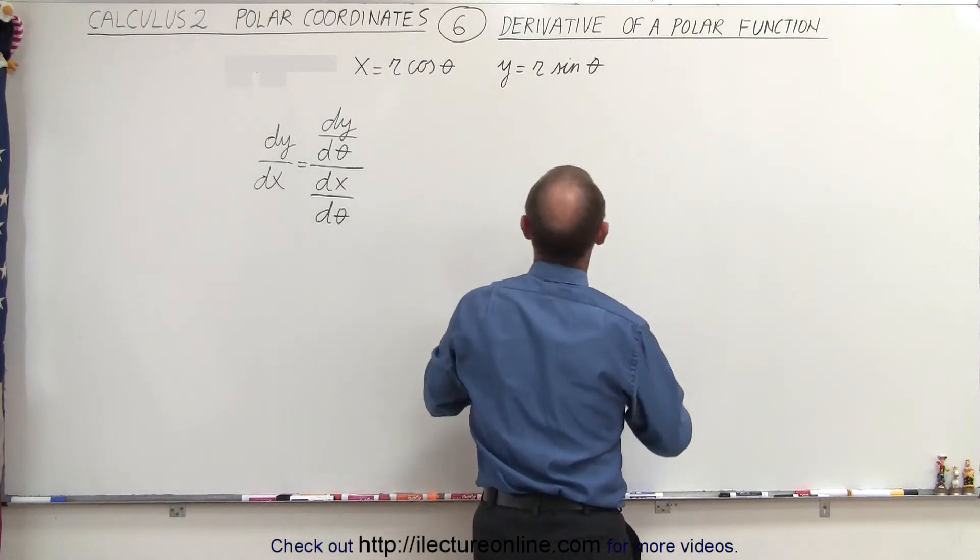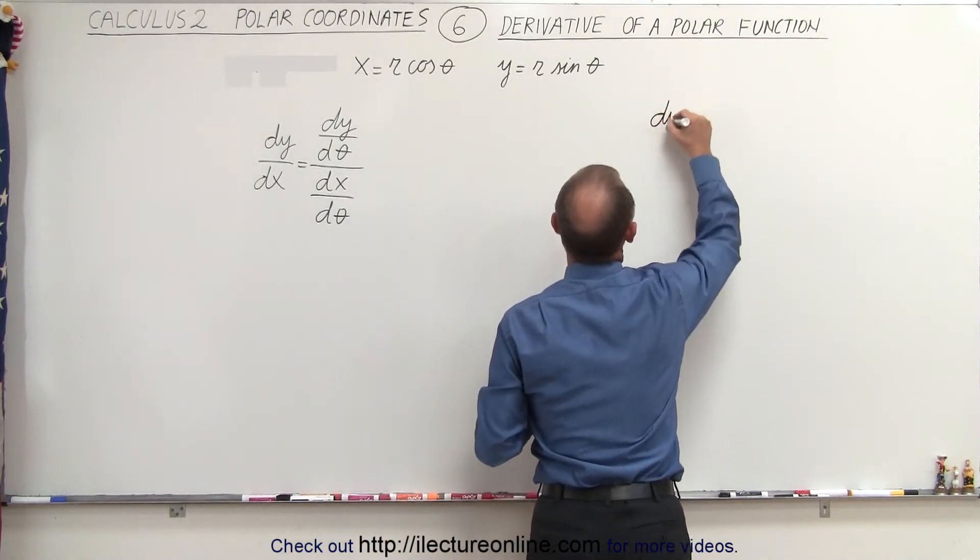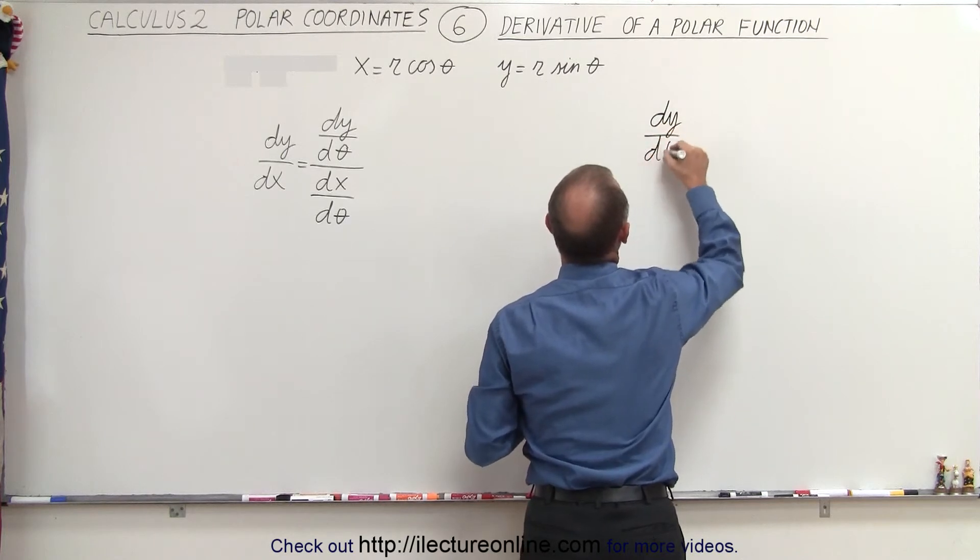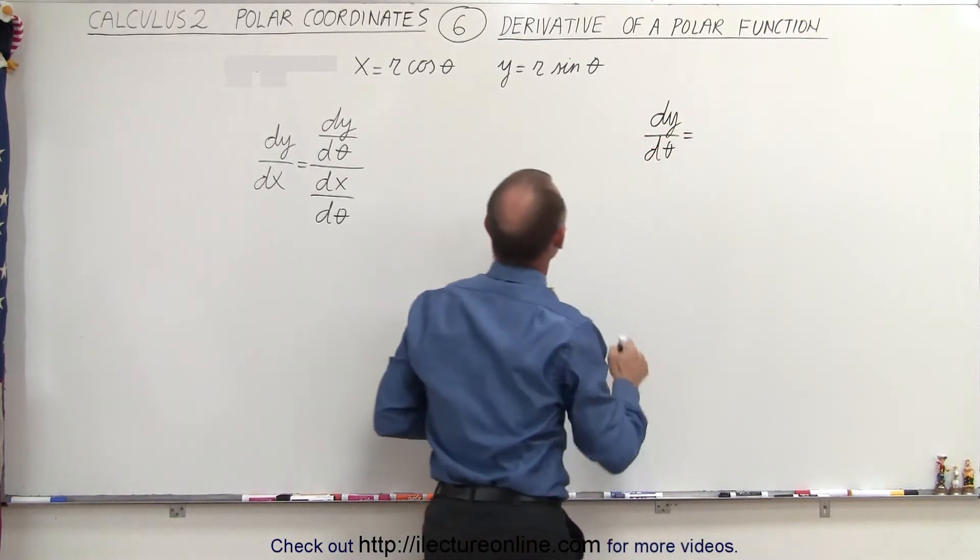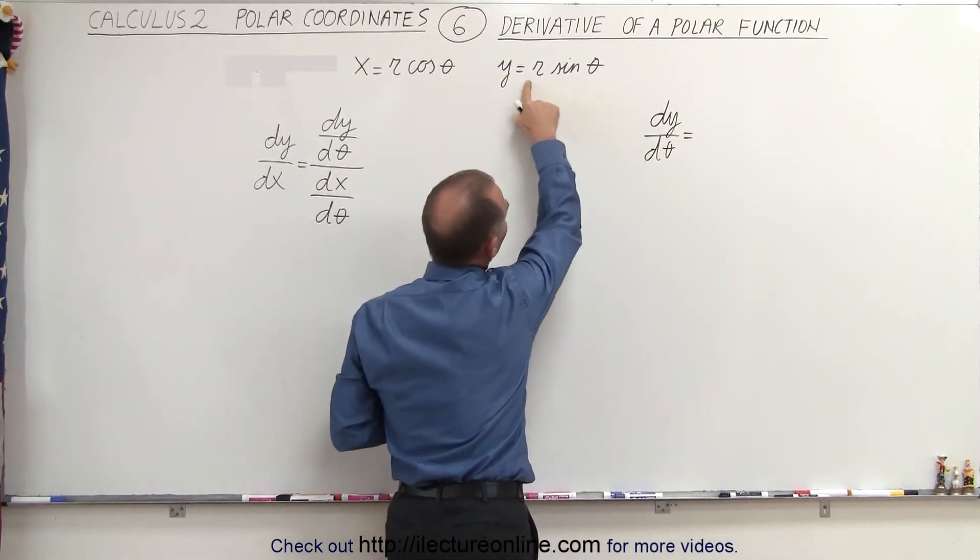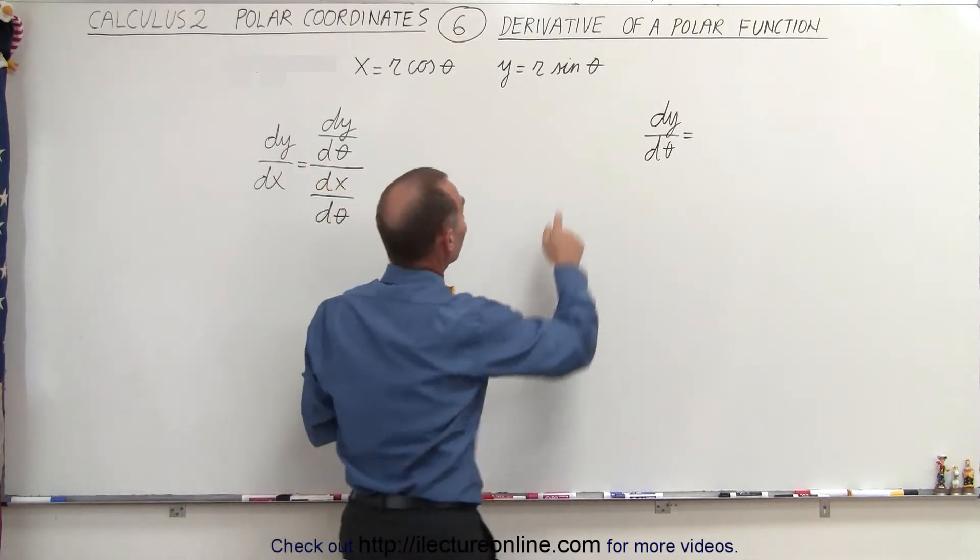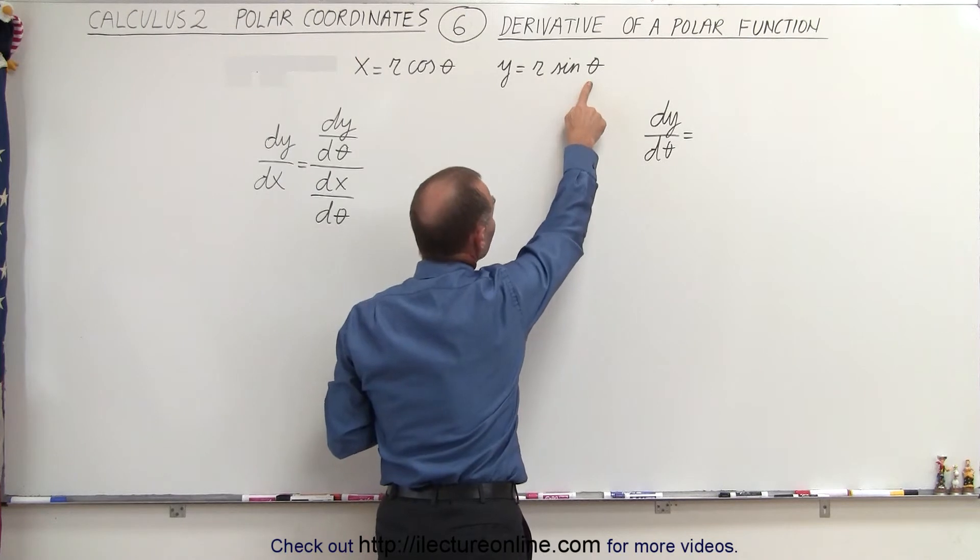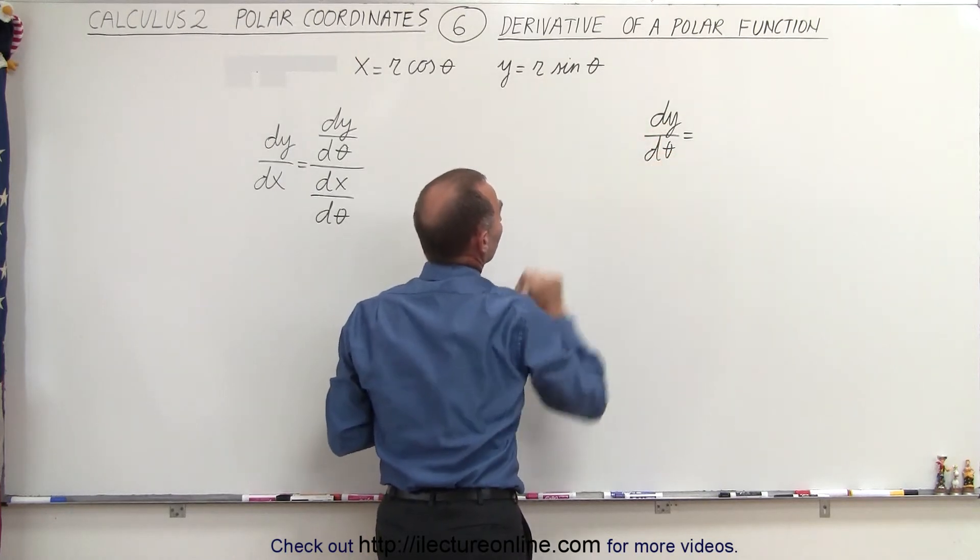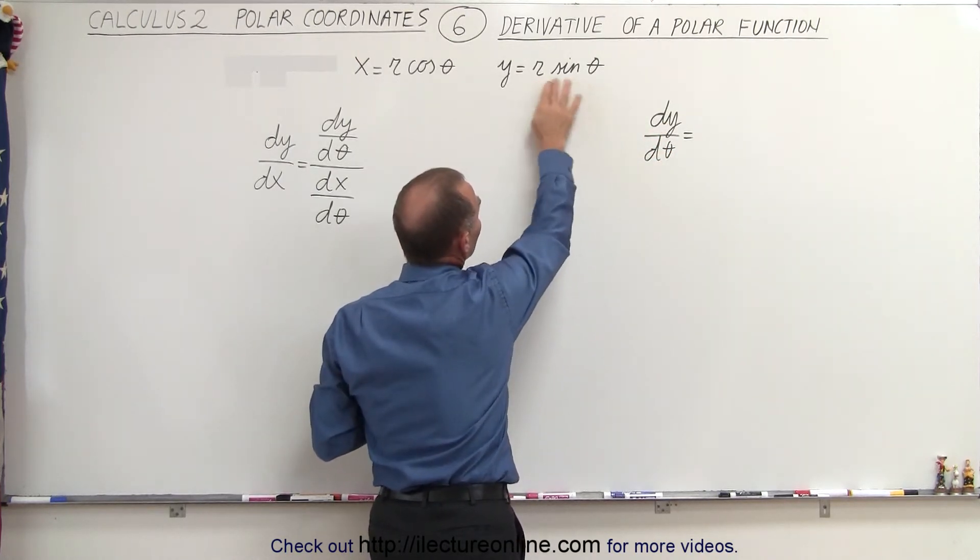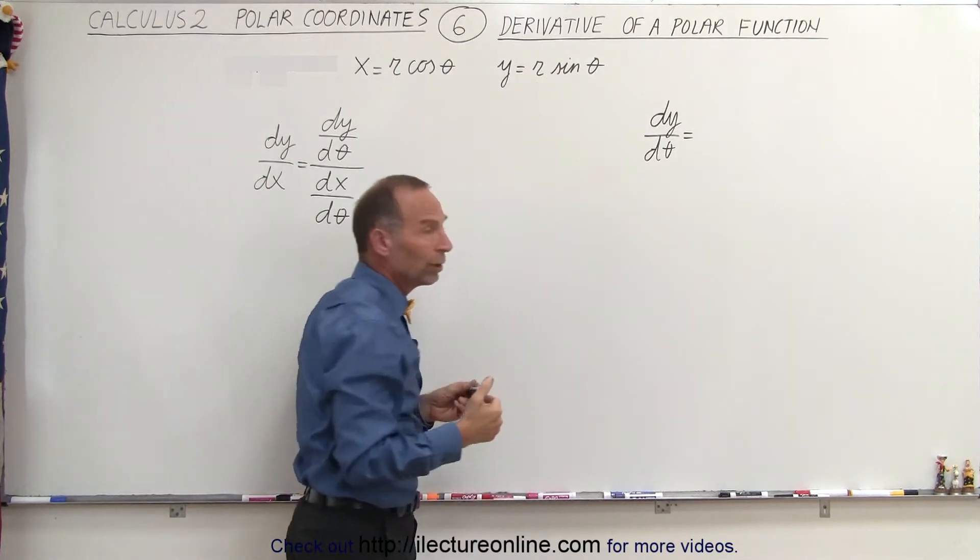So we take the function y and we say dy/dθ is equal to... Now we're going to take the derivative of the right side of this equation, but notice there are now two variables: the variable r and the variable theta, and we're doing it with respect to theta. So since we have two different variables here, we need to use the product rule.